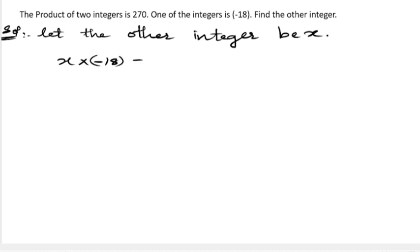So this 18 is in multiplication. Now we send this to that side, it will go in division. So x equals 270 by minus 18. Nine threes are 27, we will get zero.